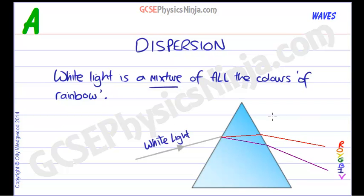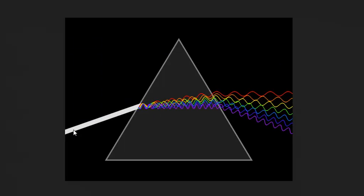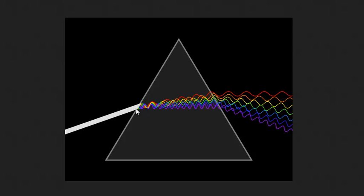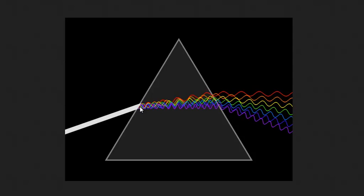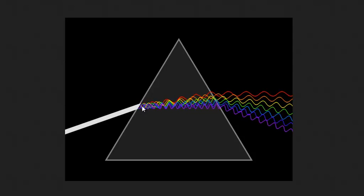Let's take another look at this. Here we see the white light coming into the prism. Remember that the different wavelengths, the different colours, slow down by different amounts, and that means they're going to refract by different amounts.